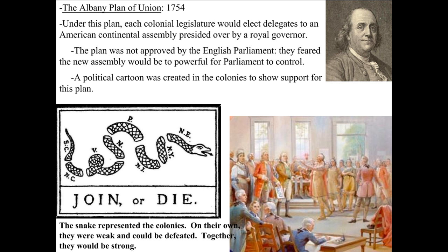In 1754, Ben Franklin proposed the Albany Plan of Union. Under this plan, each colonial legislature — the people that make the laws in the colony — would elect delegates to an American Continental Assembly presided over by a royal governor. The plan was not approved by English Parliament, though. They said they were not going to let the colonies join together and work together, because that would make them too powerful, and they wouldn't give them the right to make laws or send troops from colony to colony. From the English side, there was too much of a threat to let the colonies join together.